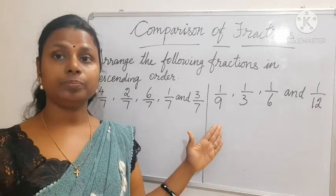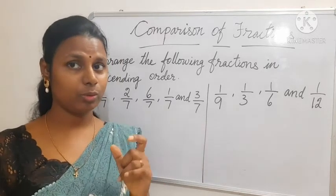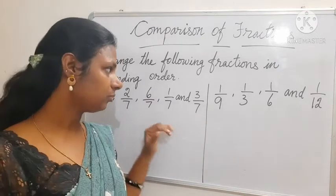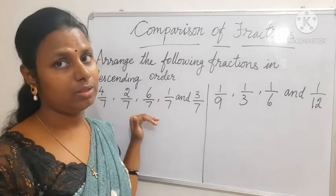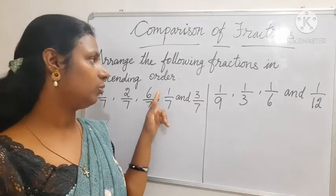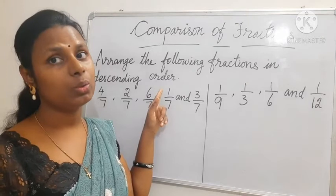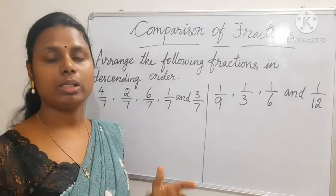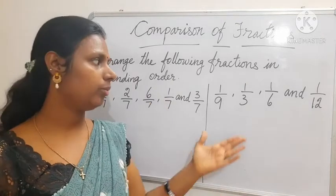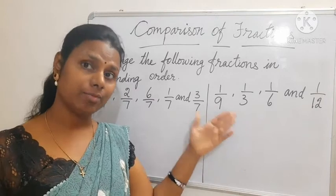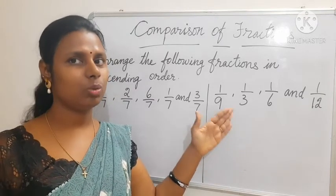Here you have to remember: when you have the same denominator, you see the numerator and treat it as a whole number. But when you have different denominators, you do just the opposite - ulta karna hai. The bigger the number, the smaller its value.